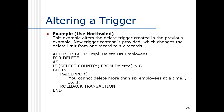Altering a trigger is the same as any other alter — you replace the entire logic with a new version. So we say alter trigger using the same name and give a different definition. In this example, we've increased the limit from one to six — we're going to let you delete up to six records at a time, but no more than that.